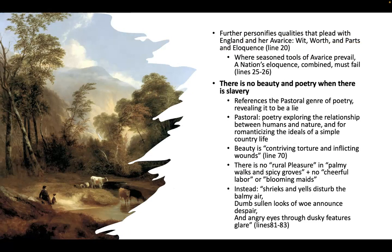She further personifies other abstract things. Not only does she give England a person and a gender, but she also talks about England's avarice — which is greed — and she personifies qualities like wit and eloquence. We referred earlier to Calliope, the muse of poetry and eloquence. But those things fail us here, Barbauld tells us. We've tried to combine our wit and eloquence, but the power of greed — avarice — prevails, and we fail in our efforts.